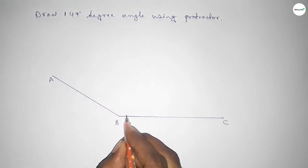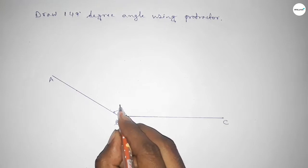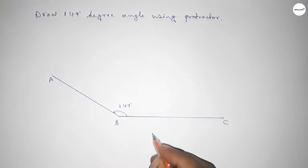We take point A here, so angle ABC up to this is the 149-degree angle. Therefore, angle ABC equals 149 degrees. That's all, thanks for watching.